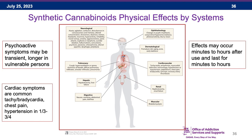Body systems affected include neurological, pulmonary, hepatic, digestive, ophthalmological, dermatological, cardiovascular, and renal. In particular, synthetic cannabinoids can cause massive breakdown of muscle tissue — rhabdomyolysis — which can clog the kidneys and cause kidney failure. That is an important effect to watch for.